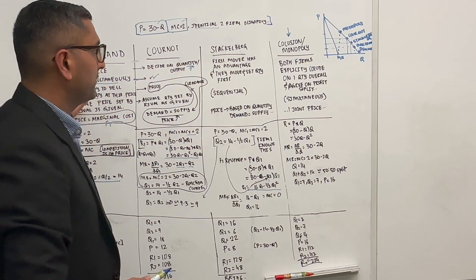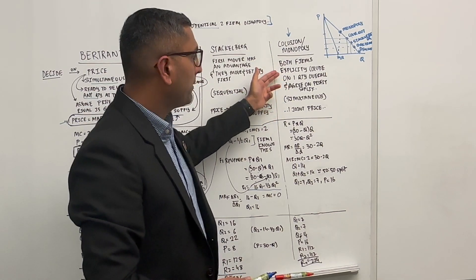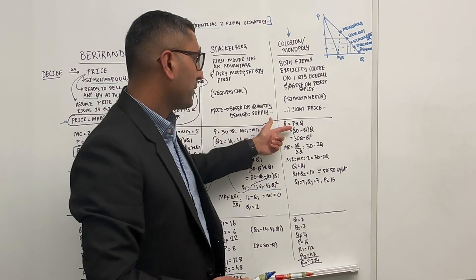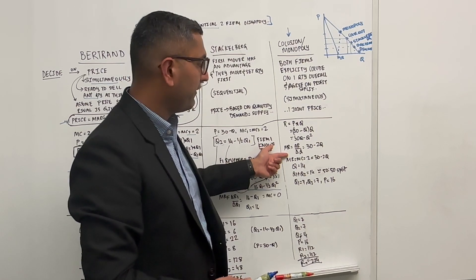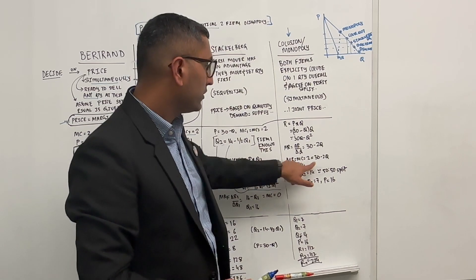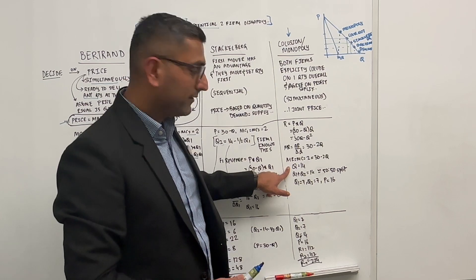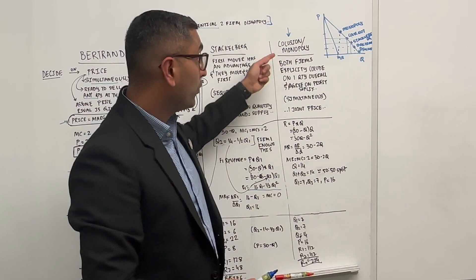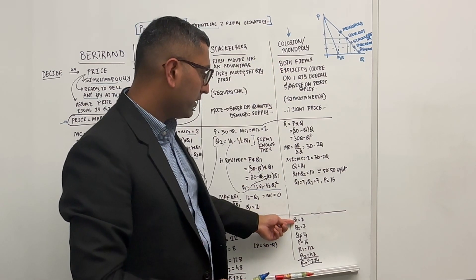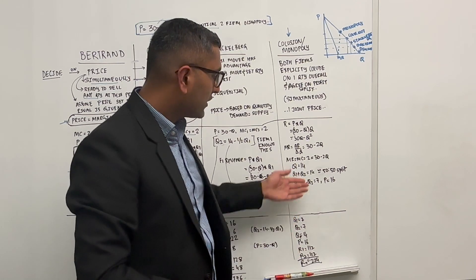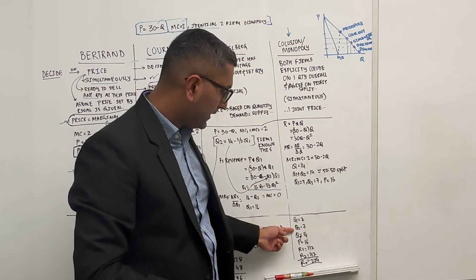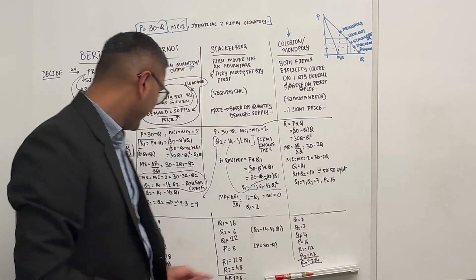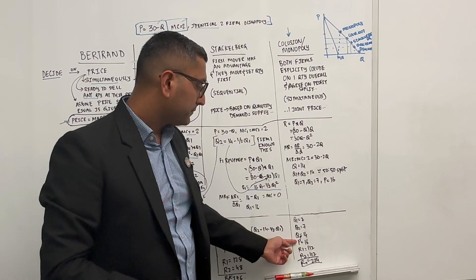If both firms collude completely — acting as a monopoly — there is no Q1 and Q2, just a single Q. Revenue is P times Q, and differentiating to get marginal revenue and setting MR = MC: MR = 30 minus 2Q = 2, so total quantity = 14. If they split 50-50, each produces 7 units. Total quantity drops to 14, price rises to 30 minus 14 = 16. Total revenue is 224. Compared to Bertrand's price of $2, the monopoly price is $16, nearly eight times higher.